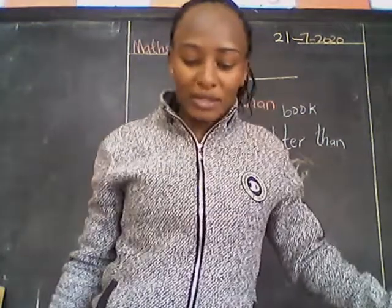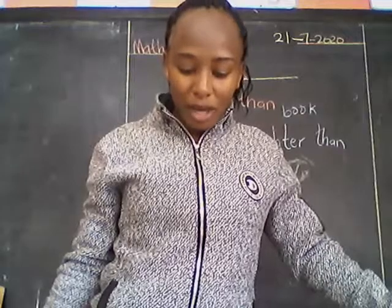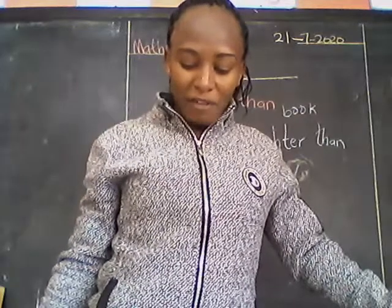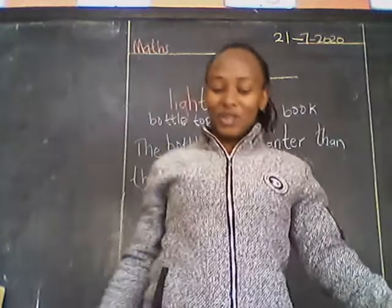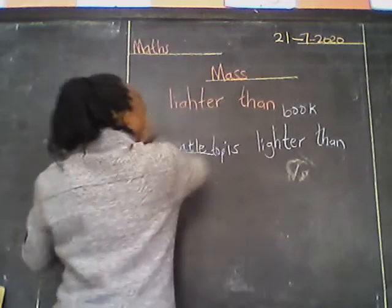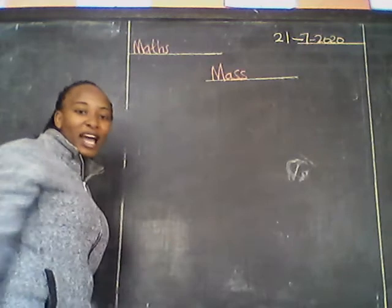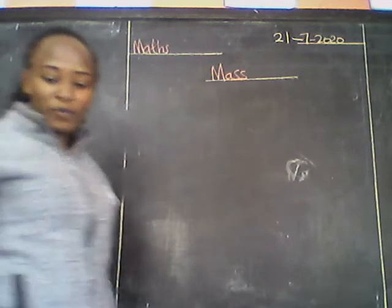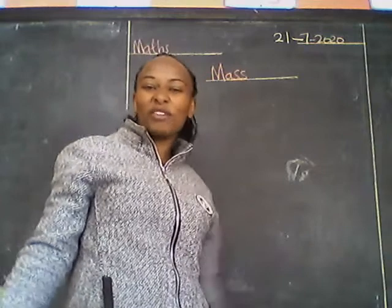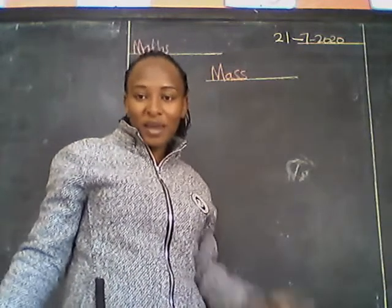Number two: the pencil or the book, which one is lighter? Number three: the stone or the pencil, which one is lighter? You write. Number four: the book or the stone, which one is lighter? You write. It's not hard. This work is not hard, because it's just knowing the lighter one. Are we together? In our next lesson we are going to look at semas — that's why we are going very fast. It's very easy. Bye-bye.